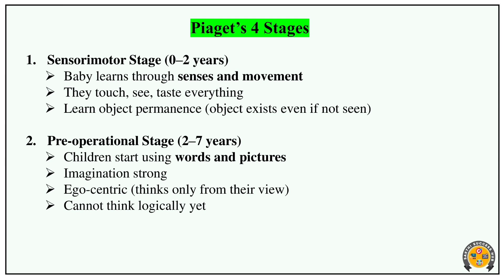The second stage is the Pre-operational stage. You can start using words and pictures. Strong imagination develops. Egocentrism is the key feature — what you think is the only thought. You can only consider your own feelings and views, not others'.